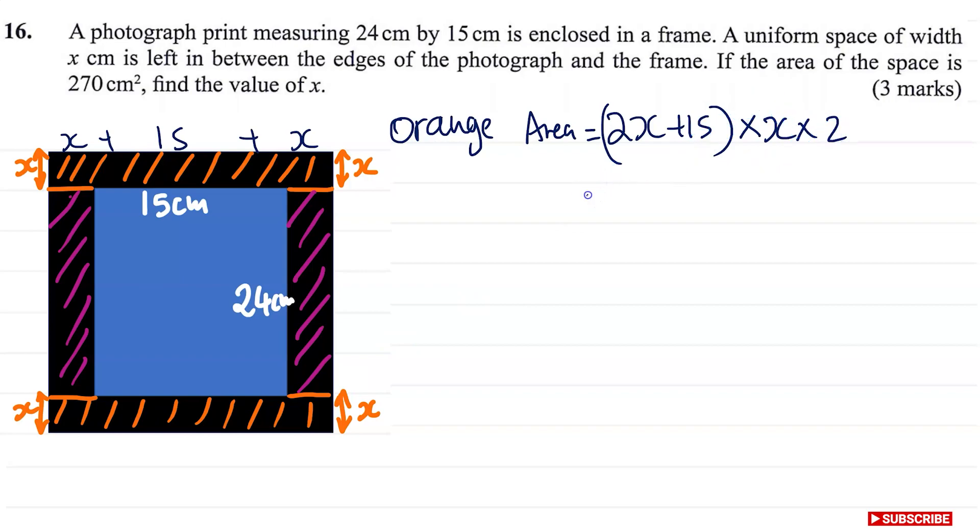If you expand this, what would you get? 2x times x, 2x² times 2, this is going to give you 4x². And then we have 15 times x times 2. This is going to give you plus 30x. So this is the orange area.